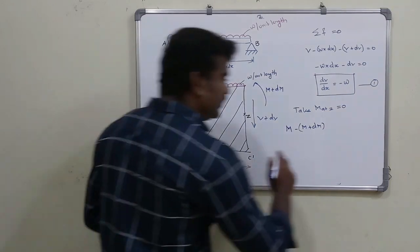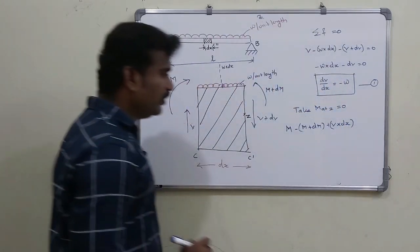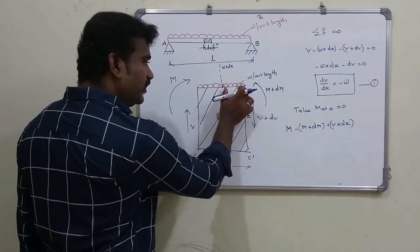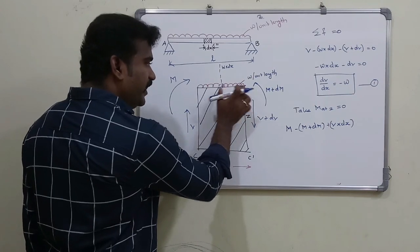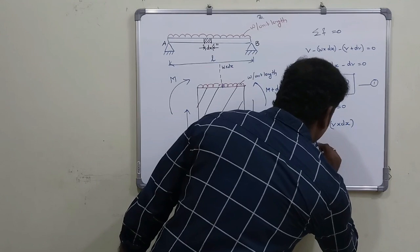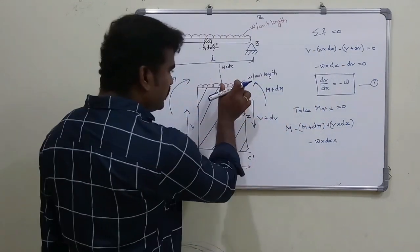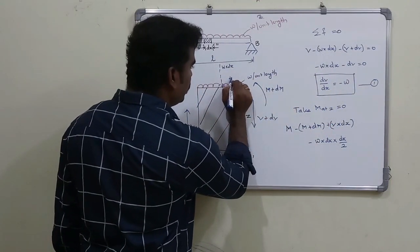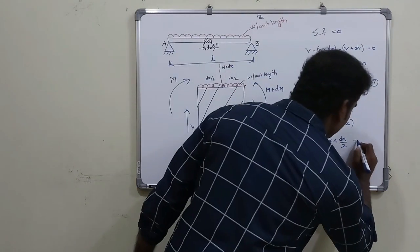Plus V into dx. This is another contribution — the distributed load W·dx acts at the center of the element, so its moment arm is dx divided by 2. That gives minus W·dx into dx/2. This whole expression is equal to zero.